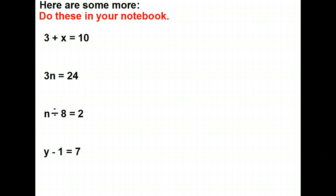Here's some more for you to try in your notebook. 3 plus some number equals 10. 3 times some number is 24. A number divided by 8 gives me 2. And some number minus 1 gives me 7. Remember, you're going to need to use the opposite. If we're adding here, we'll need to subtract here. If we're multiplying here, we'll need to divide here. If you're dividing here, you'll need to multiply here. If you're subtracting here, you'll need to add here. Go ahead and stop the video. Give these a try, and we'll check in just a second.